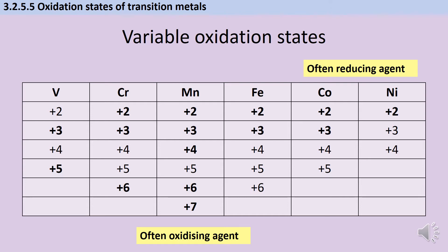Another interesting thing to note is how these species respond electrochemically. The higher the oxidation state, the more likely that species is to act as an oxidizing agent. The classic example of this is the manganate ion, which contains manganese with a plus-seven oxidation state — a really, really good oxidizing agent.